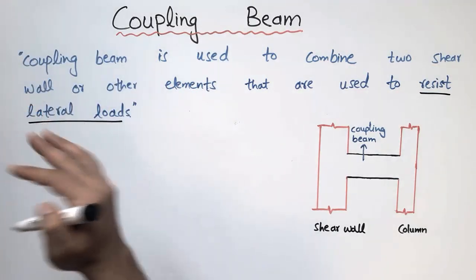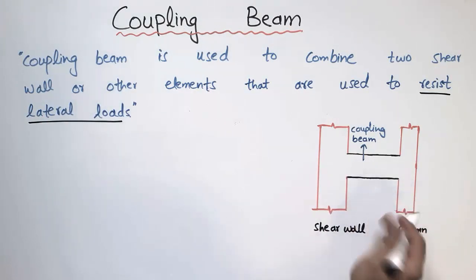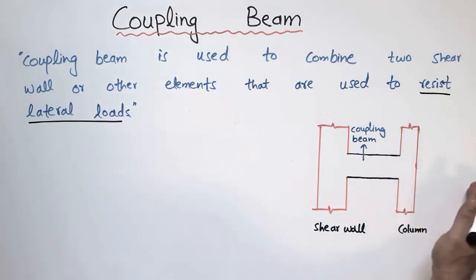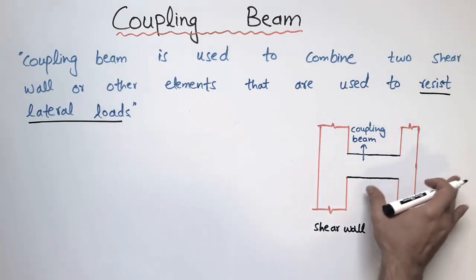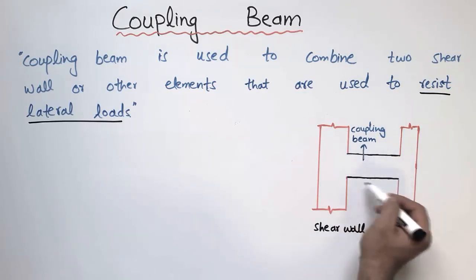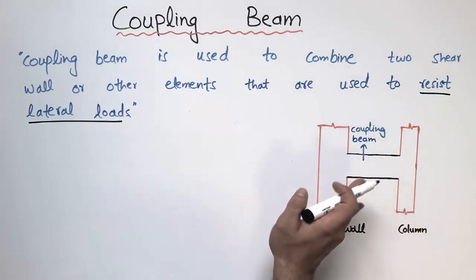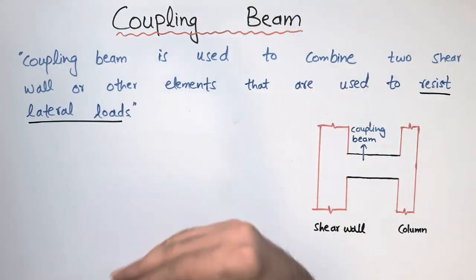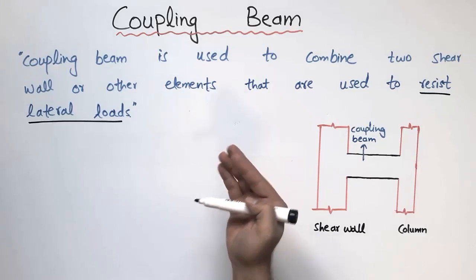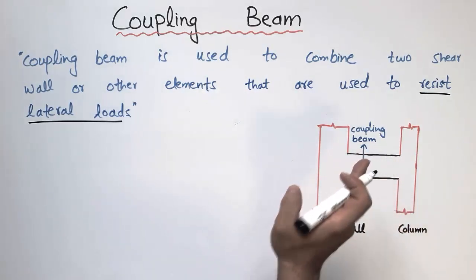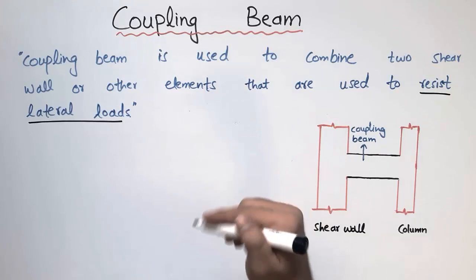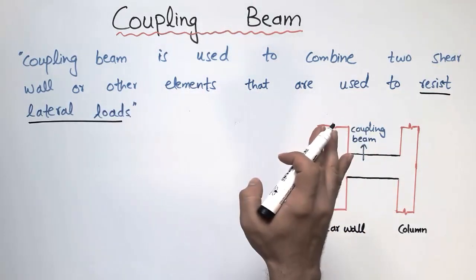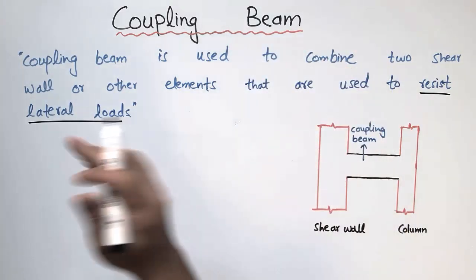As you can see in this figure, one shear wall is provided on the left side and the columns are provided on the other side. To increase the stiffness of this system, we provide the coupling beam. The coupling beam increases the stiffness of the building and reduces the overturning effect. It is mostly provided in buildings with more than 30 to 40 storeys, not in small-storey buildings.